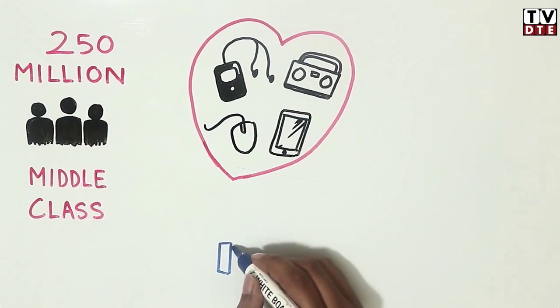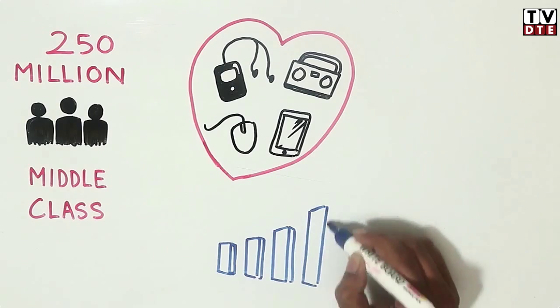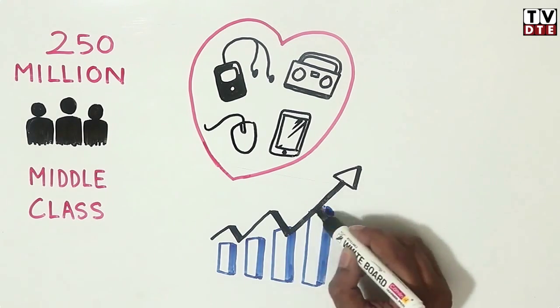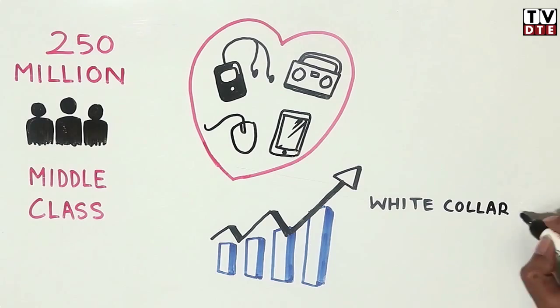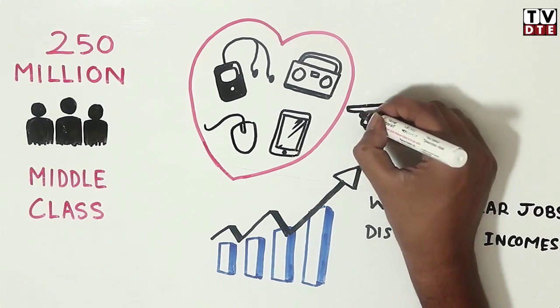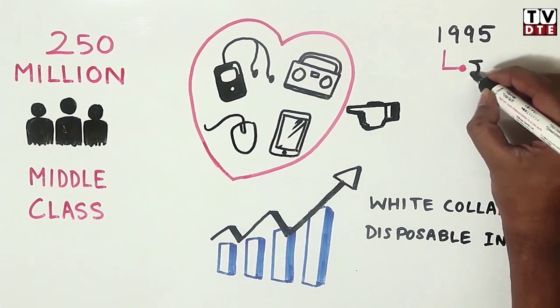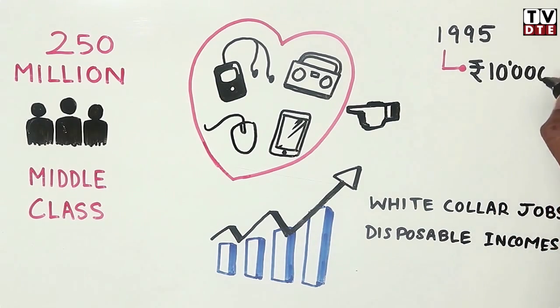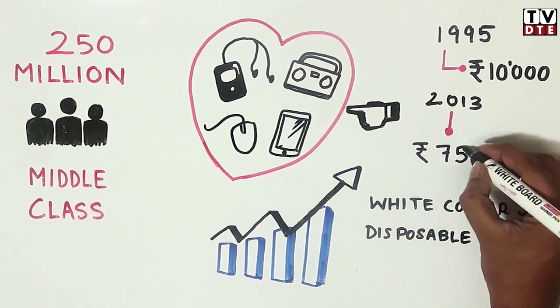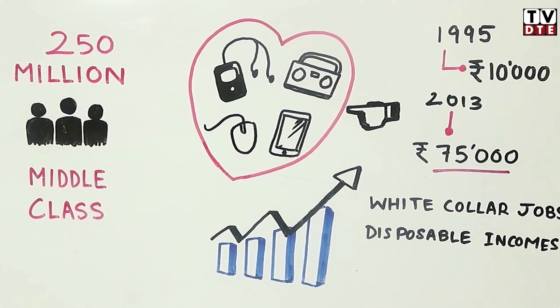Post-liberalization of the Indian economy in the 1990s, it saw growth in both white-collar jobs, disposable incomes, and access to modern appliances and gadgets. In 1995, an average Indian earned Rs. 10,000. In 2013, the per capita income increased to about Rs. 75,000.